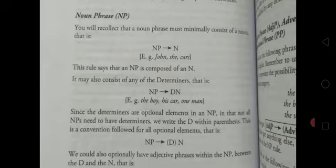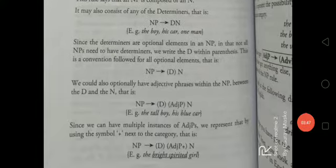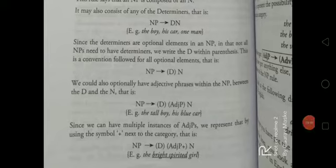We could also optionally have adjective phrases within the noun phrase between the determiner D and the N, that is noun. This is NP arrow (D) (AdjP) N. For example, the tall boy, his blue car.